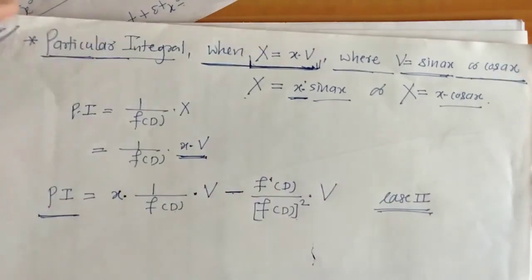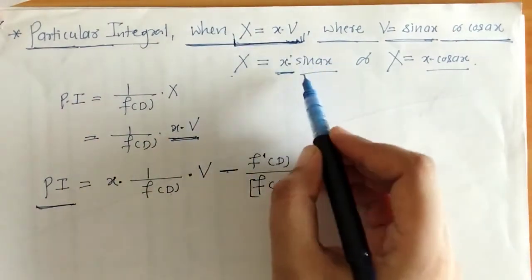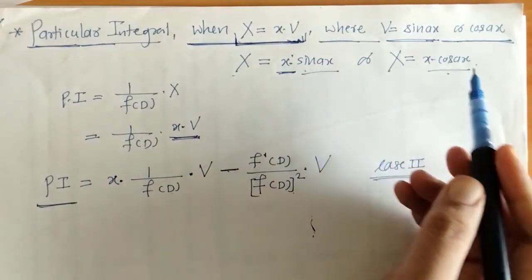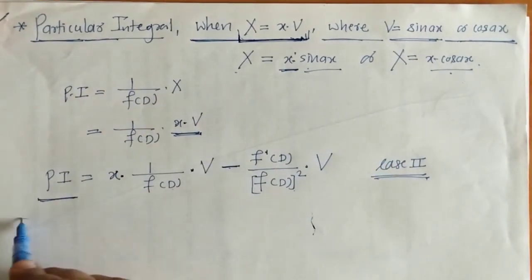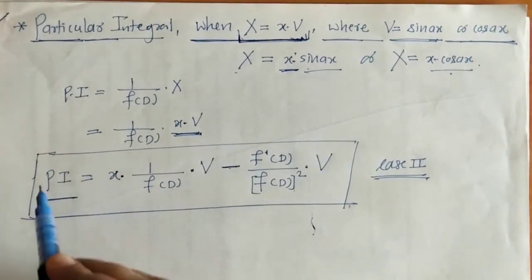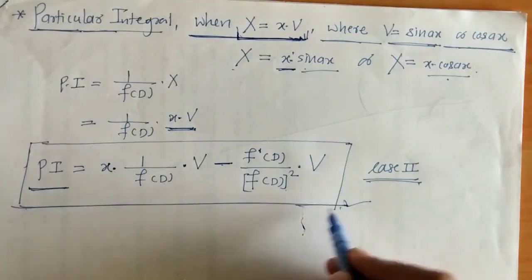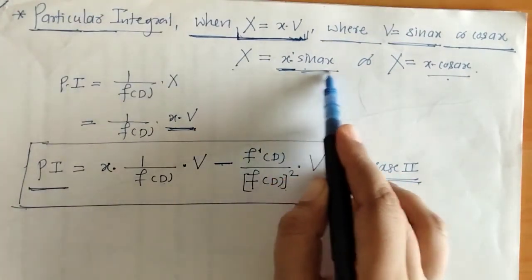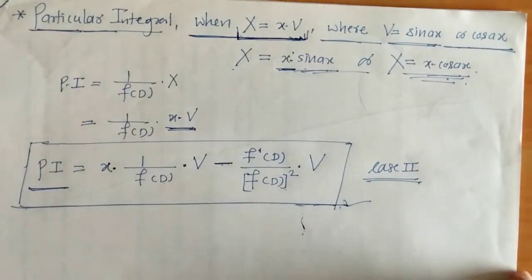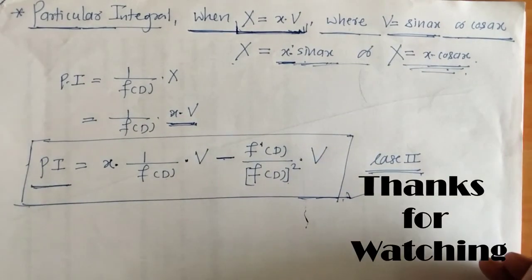To summarize, when we have a function X = x·v where v is sin(ax) or cos(ax), we apply this formula for finding PI. Remember this formula and use it whenever X is of this type. That's it for now — thank you, keep watching, see you in the next video.